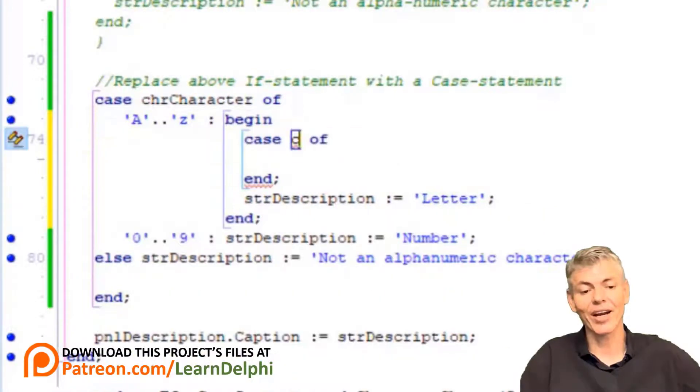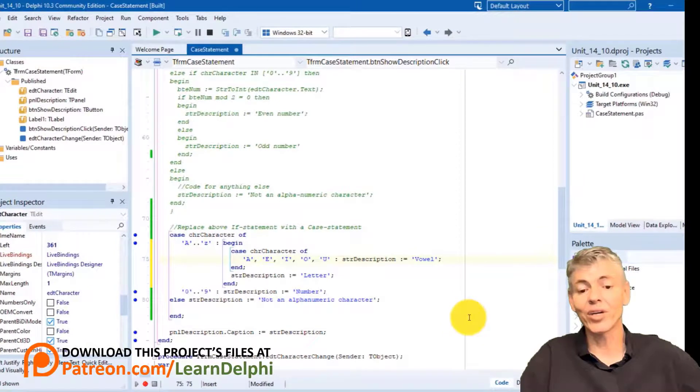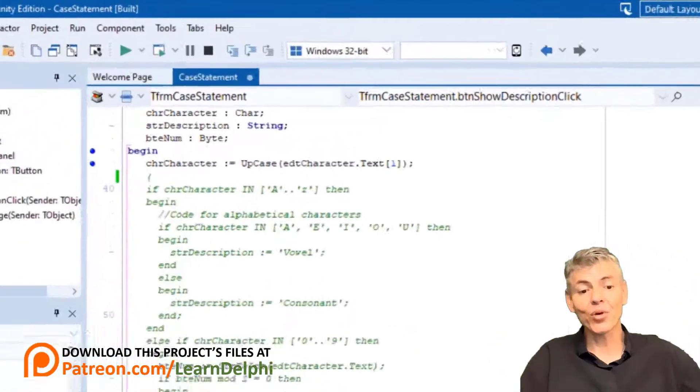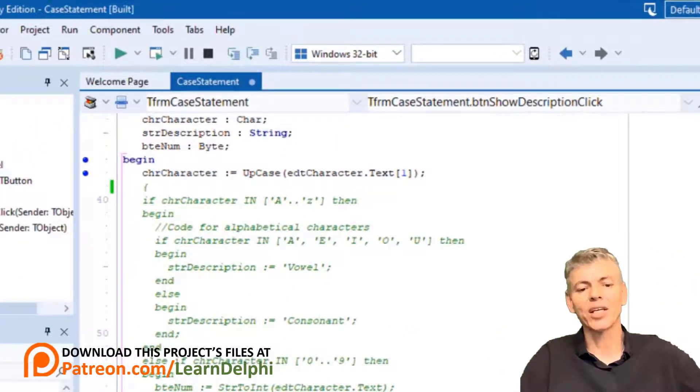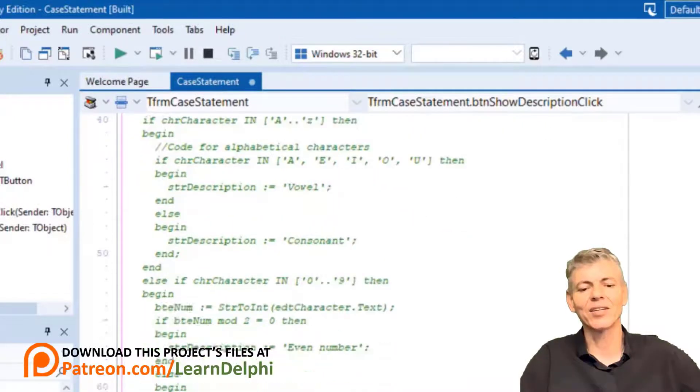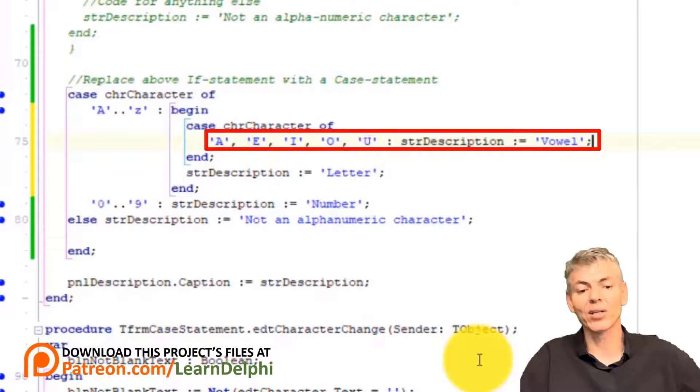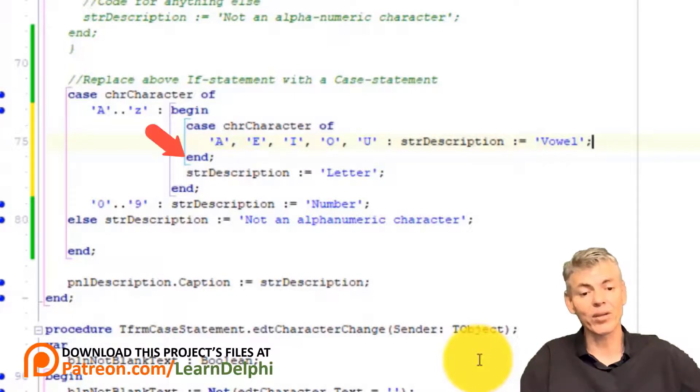Now, go under the begin statement and type case chrCharacter of. On the blank line, type this code. Here we use a nested case statement to check if chrCharacter is an uppercase vowel. Remember, we do not have to evaluate the lowercase vowels, because at this point the character will only be an uppercase. That is because we converted the character to an uppercase letter. Here we do it with the upcase function. I also explained the upcase function in the last lesson.